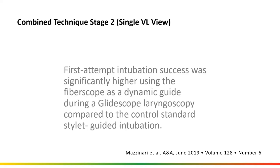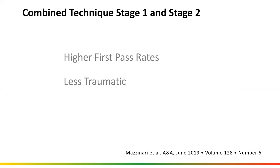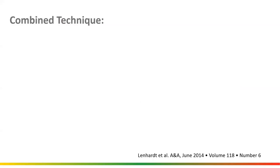First attempt tracheal success in known difficult airways: 67% when using a non-dynamic or static rigid tracheal access tool, 91% when you introduce a dynamic introducer. And look what happens to airway injury rates: 11% with the standard rigid static tool, 1% when you don't use tissue to turn corners and don't have force on tissues — when you have a dynamic stylet. They concluded first attempt intubation success was significantly higher when using the fiber optic bronchoscope as a dynamic guide during GlideScope laryngoscopy compared to standard stylet-guided intubation.